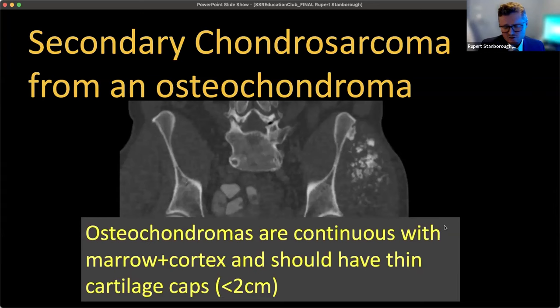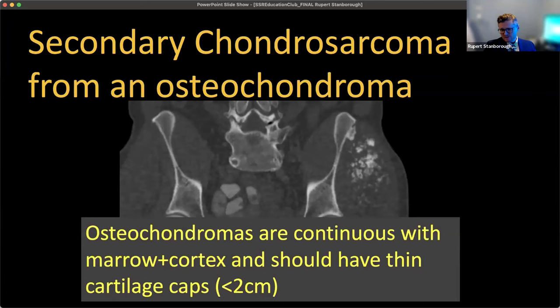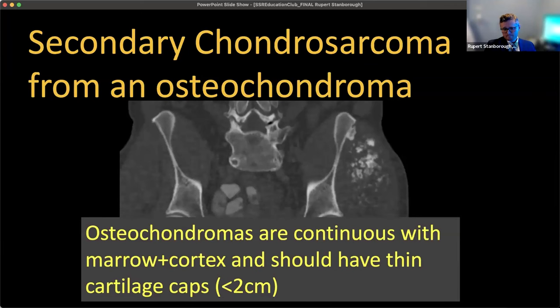For this case, I want you to know about osteochondromas. They're continuous with marrow and cortex and should have that thin cartilage cap, usually less than two centimeters. In practice, I've found that cutoff is not that precise — usually it's something like this case where that cartilage cap is now a monster, or it's just a very thin cap. This patient had the iliac bone with the osteochondroma resected and an en bloc resection of the soft tissue component.